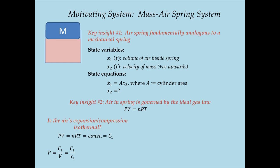This gives a relationship for pressure in terms of volume, allowing us to write the second state equation. The acceleration X2 dot equals 1 over mass M multiplied by the summation of forces: a gravitational force Mg acting downward gives negative Mg, and the pressure from the air spring equal to C1 over X1 acts upwards, giving plus C1 over X1. So X2 dot equals (1/M)(−Mg + C1/X1).